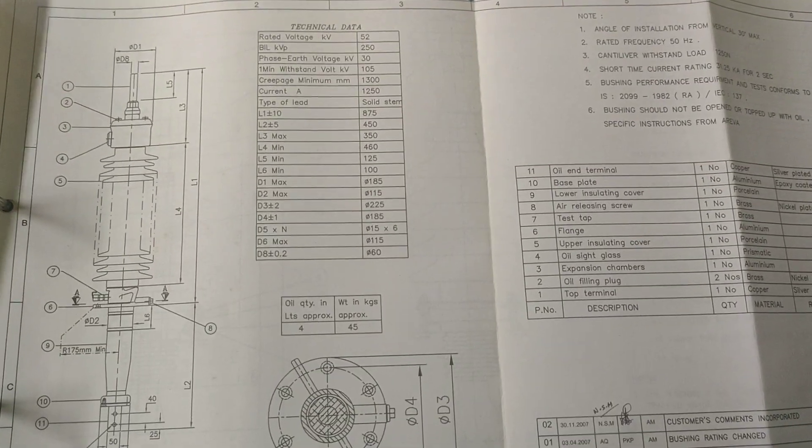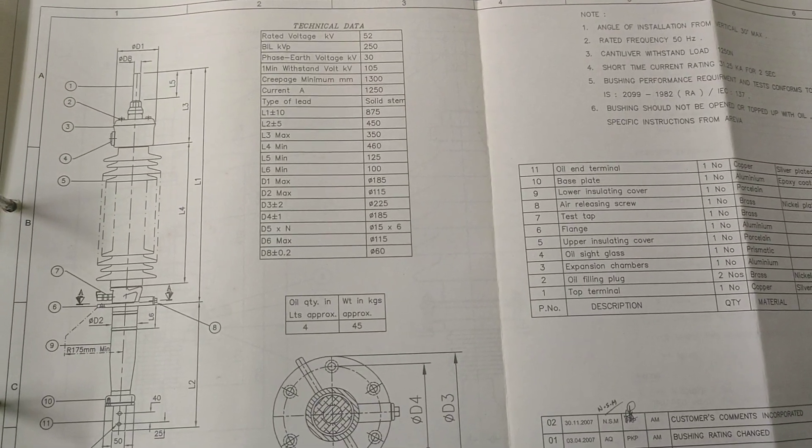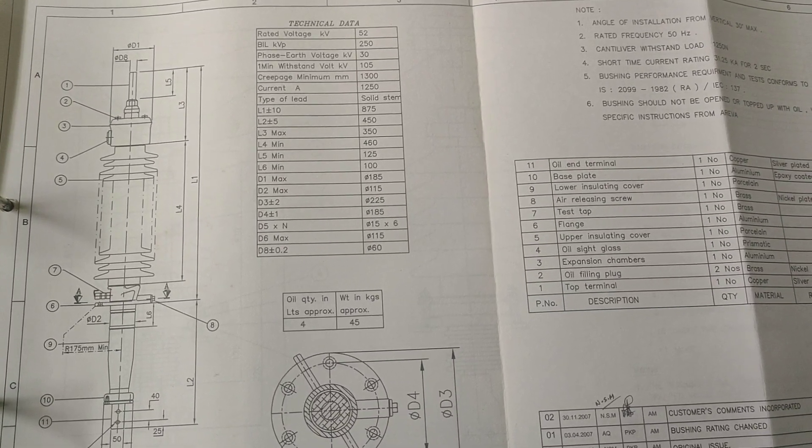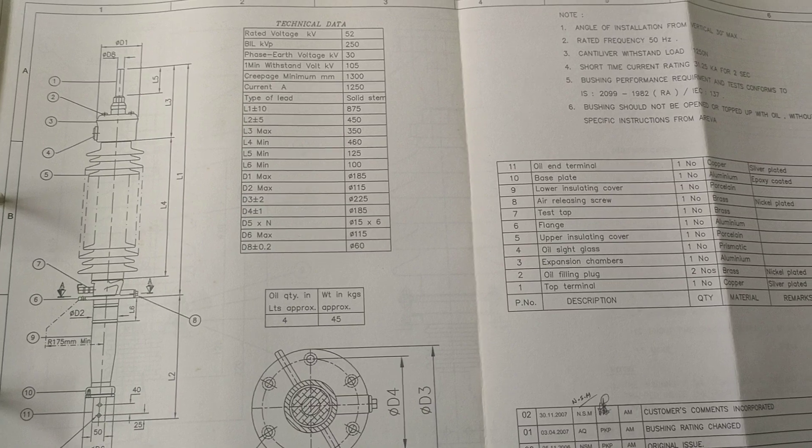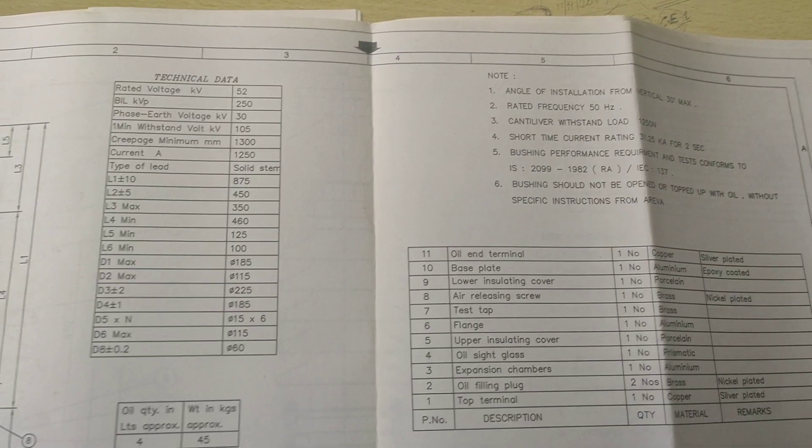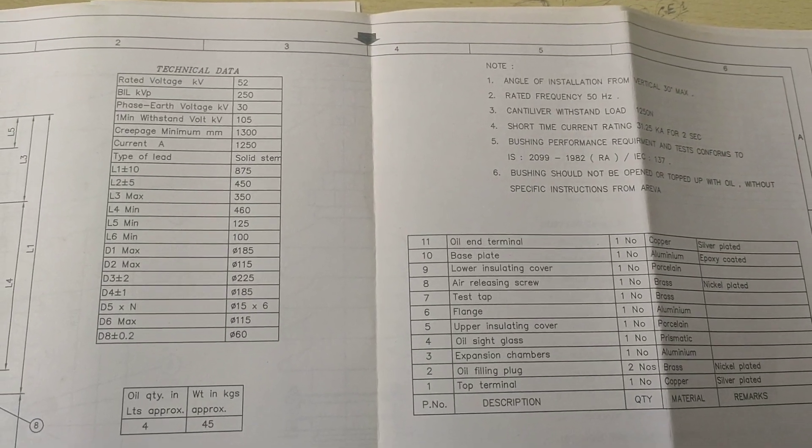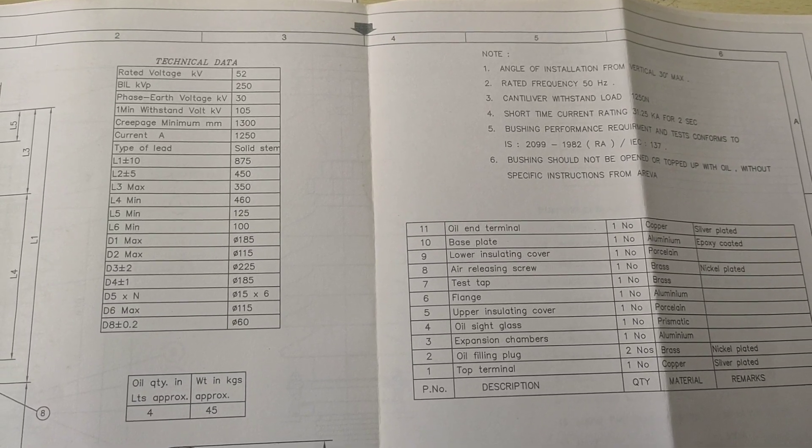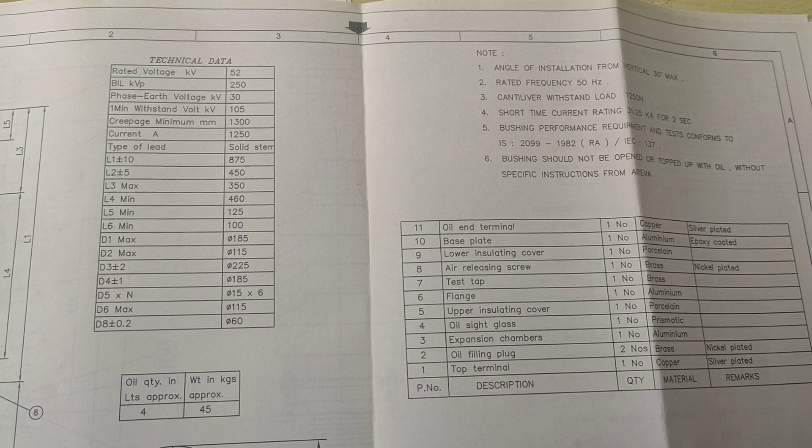This is the picture of the LV type bushing, and the specifications are given here. The rated voltage is 52 kV, basic insulation level 250. All the details are given here. The creepage distance is given here. This is the short circuit current rating, 31.25 kiloampere for two seconds, and the current rating is 1250 ampere LV tertiary bushing.